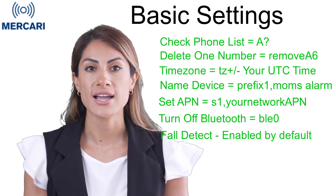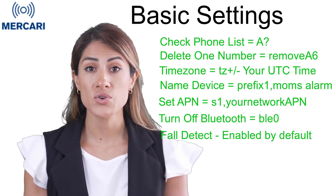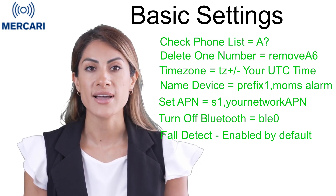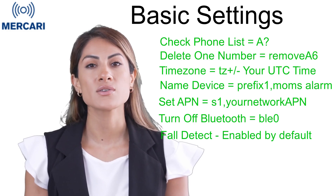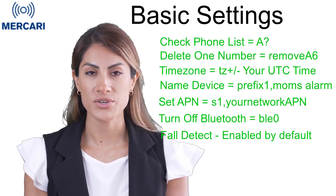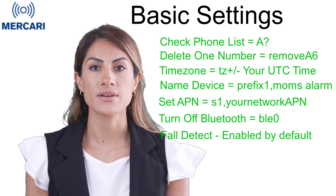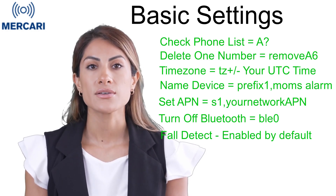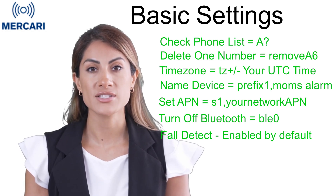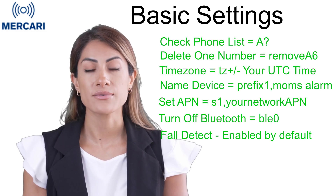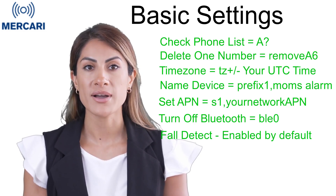The device uses UTC time, so you will need to adjust your time zone for your locality so that your text messages show the correct time. The SMS code is TZ plus or minus your time zone. For example, U.S. Eastern time you would enter TZ-5, Pacific time you would enter TZ-8, London is TZ-1, Australian Eastern Standard Time is TZ+10, and New Zealand is TZ+12.